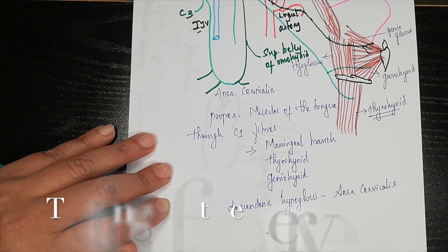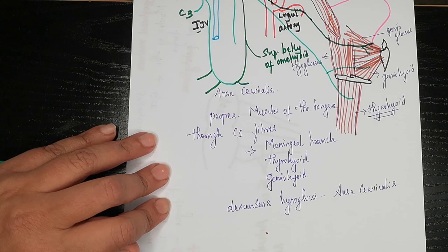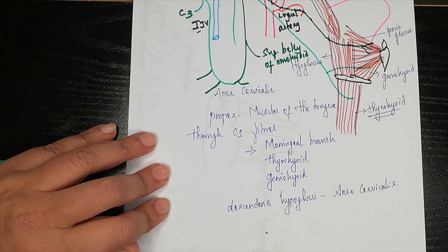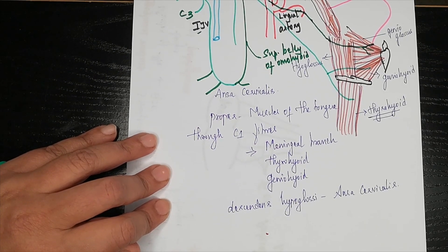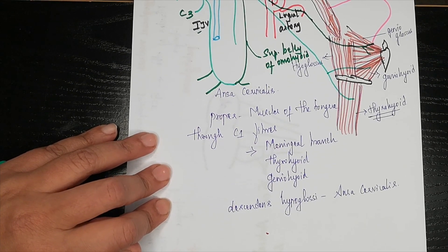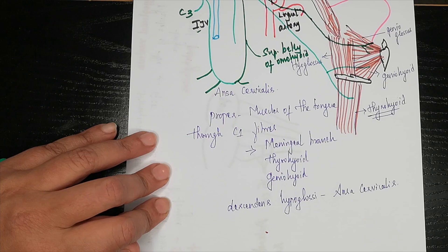What happens if there is a lesion of the hypoglossal nerve, and how can it be tested? When the patient is asked to protrude the tongue, if there is a paralysis of the left side, the tongue deviates to the affected side. If the patient is able to protrude the tongue and the tongue is held in the midline, it means that the hypoglossal nerve is intact.